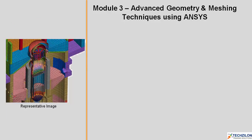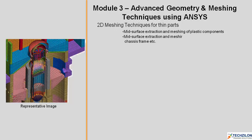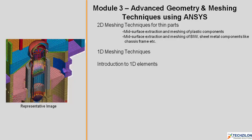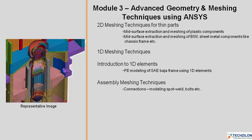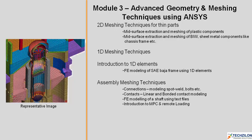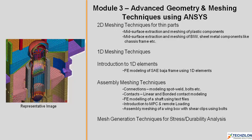In module 3, we'll be looking into advanced geometry and meshing techniques using ANSYS. We will learn 2D meshing techniques for thin parts, including mid-surface extraction and meshing of plastic components and BIW sheet metal components like chassis. We'll then move on to 1D meshing techniques, such as FE modeling of an SAE Baja frame using 1D elements. Under assembly meshing techniques, you'll cover connections such as modeling spot welds, bolts, contacts, linear and bonded contact modeling, FE modeling of a shaft using text files, MPC and remote loading, assembly meshing of a wing box with shear clips using bolts, and mesh generation techniques for stress and durability analysis.